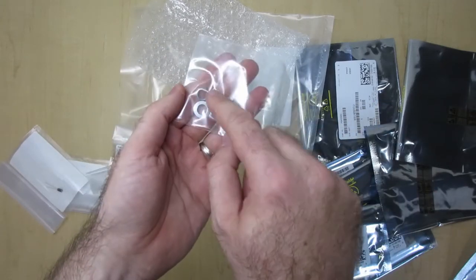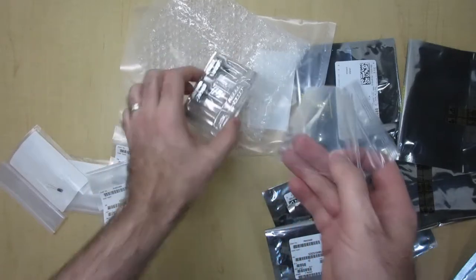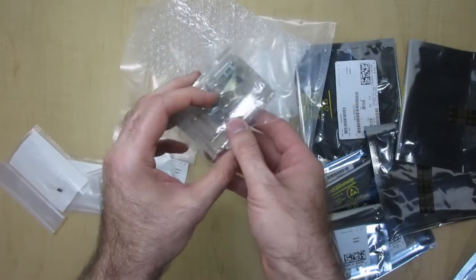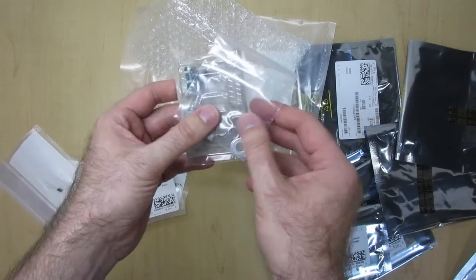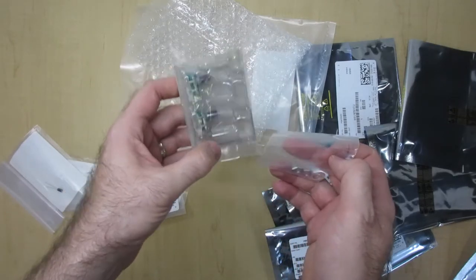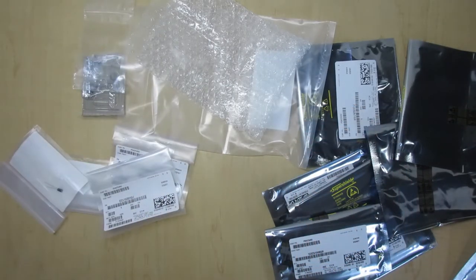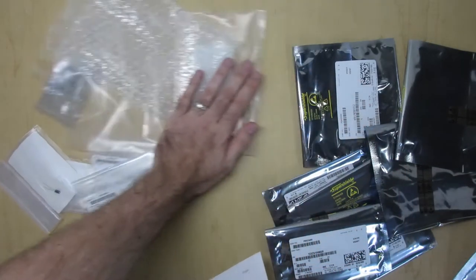These are the little nuts that secure the rotary encoder to whatever you mount it to. So awesome that they included that as well, because if you don't have these, this is kind of useless when you put these things in a box and there's no way to fix it.